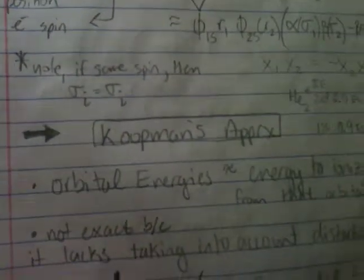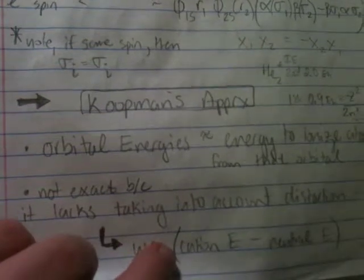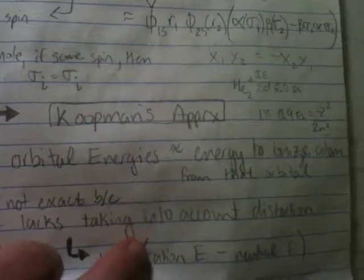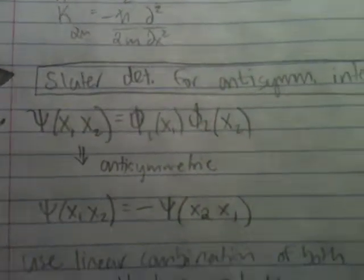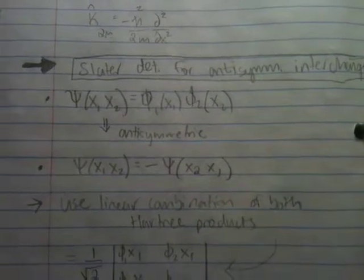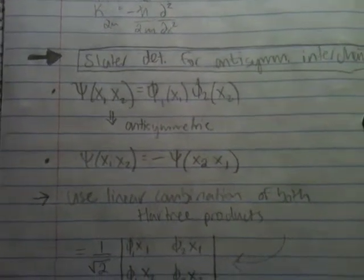Koopman's approximation good for figuring out orbital energies and how they relate to ionization energy, and then using the Slater determinant to get proper anti-symmetric interchange.